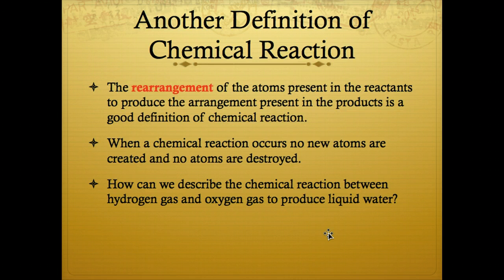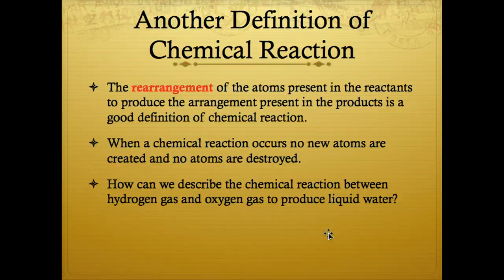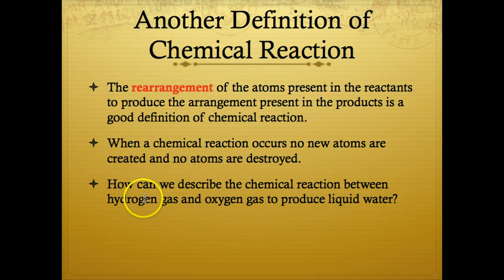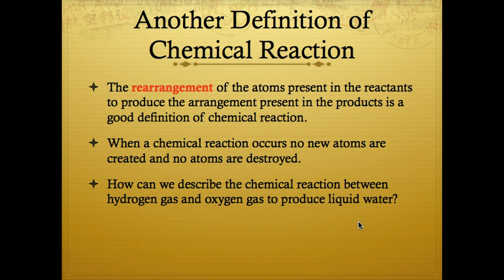Another definition of a chemical reaction: the rearrangement of the atoms present in the reactants to produce the arrangement present in the products. When a chemical reaction occurs, no new atoms are created and no atoms are destroyed — you have to remember that. The three key words about a chemical reaction are: rearrangement of atoms.